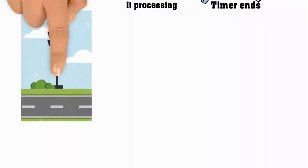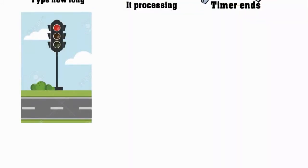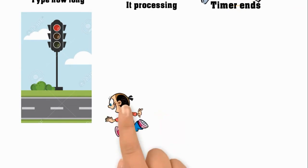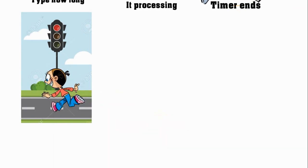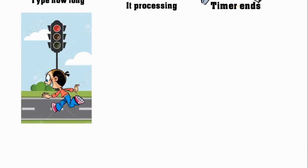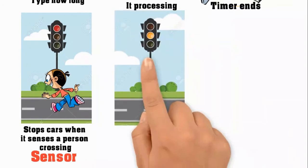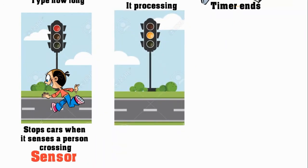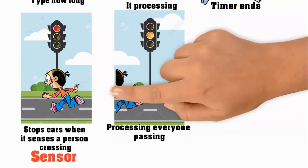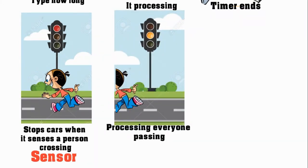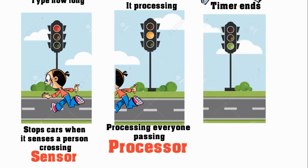Also, imagine the traffic light stops for people to cross. It senses that there's no car. And then once it knows that everyone has crossed — that's the processing — it shows green so that cars can then pass, which is the output.